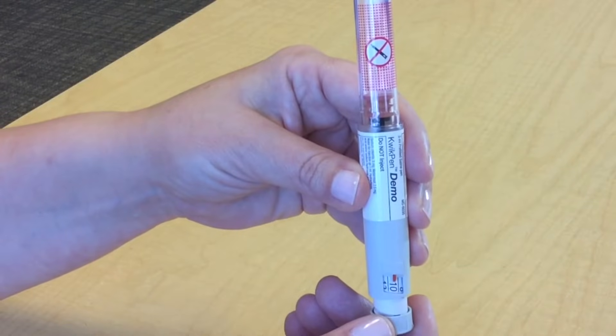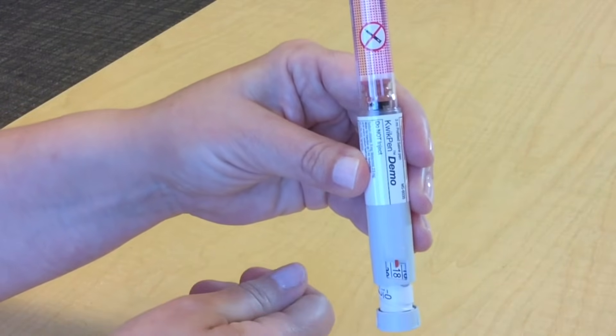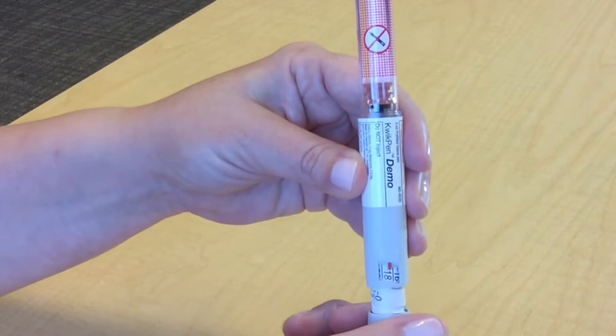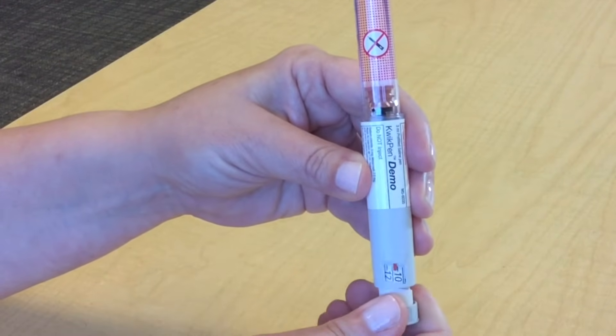If you accidentally turn the knob too far, say like that, it's okay. You can just turn it back to the dose that you need, and in this case, 10.